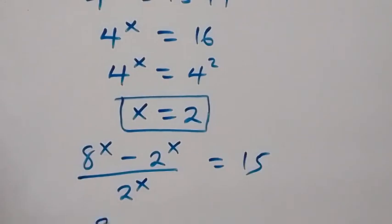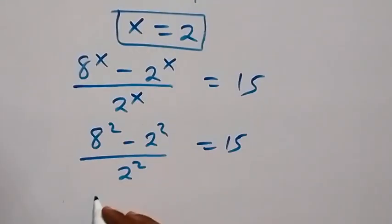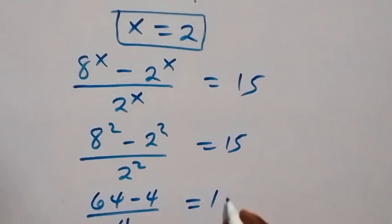This gives us (8^2 - 2^2) / 2^2. Is this equals to 15? From here, 8 squared is 64 minus 4, then (64 - 4) over 4, is this equals to 15?